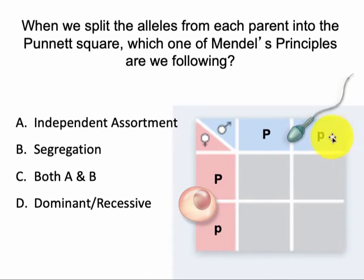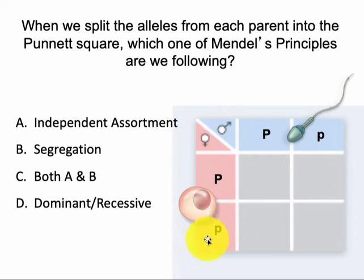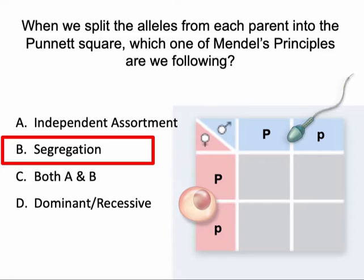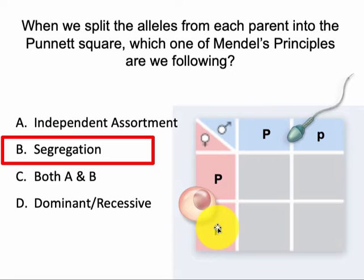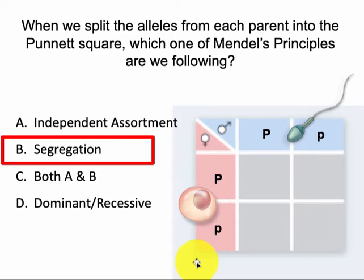If they're homozygous, both boxes will have the same version because they only have one type of allele — either both dominant alleles or both recessive alleles. The same applies for the other parent. So why do we put only one allele on each box? This is because of the principle of segregation. Mendel says of the two alleles that a parent has, only one will get passed on to the offspring. Even though we are diploid, in meiosis the gametes we produce are haploid and only have one version of each allele.